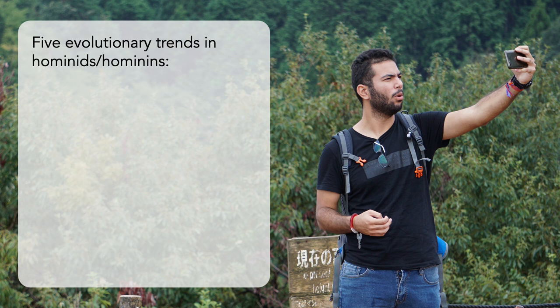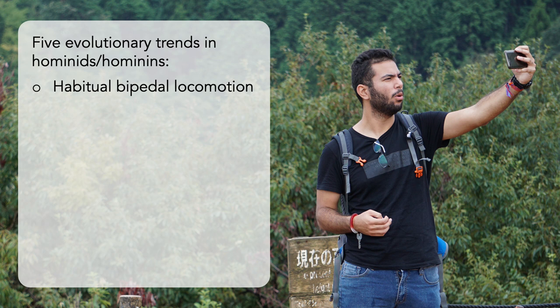As we continue our overview of the hominid family tree, there are five evolutionary trends you'll likely be noticing along the way. The first is habitual bipedal locomotion. This is a synapomorphic, or shared trait of the hominin line, excluding Pan, the chimpanzees. We'll talk about that in a minute.